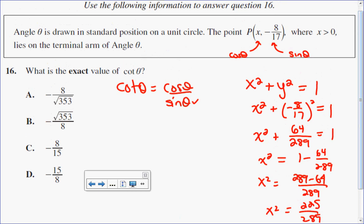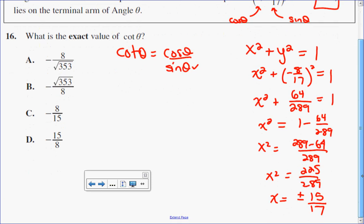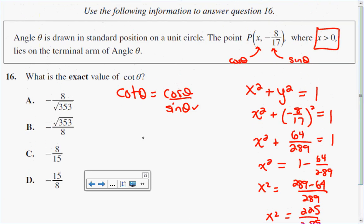Now, back at the beginning of this question, it said that x is a value greater than 0. So, I know that my x value has to be 15 over 17, which is your cosine value.